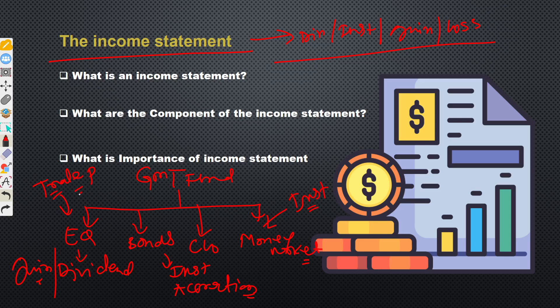In fund accounting, net assets value is calculated using the balance sheet: total assets minus total liabilities equals net assets. The components of the balance sheet are capital, liabilities, and assets. In interview questions, income statement and P&L are the same thing — in fund business, P&L is your income statement where all expenses, losses, gains are computed.